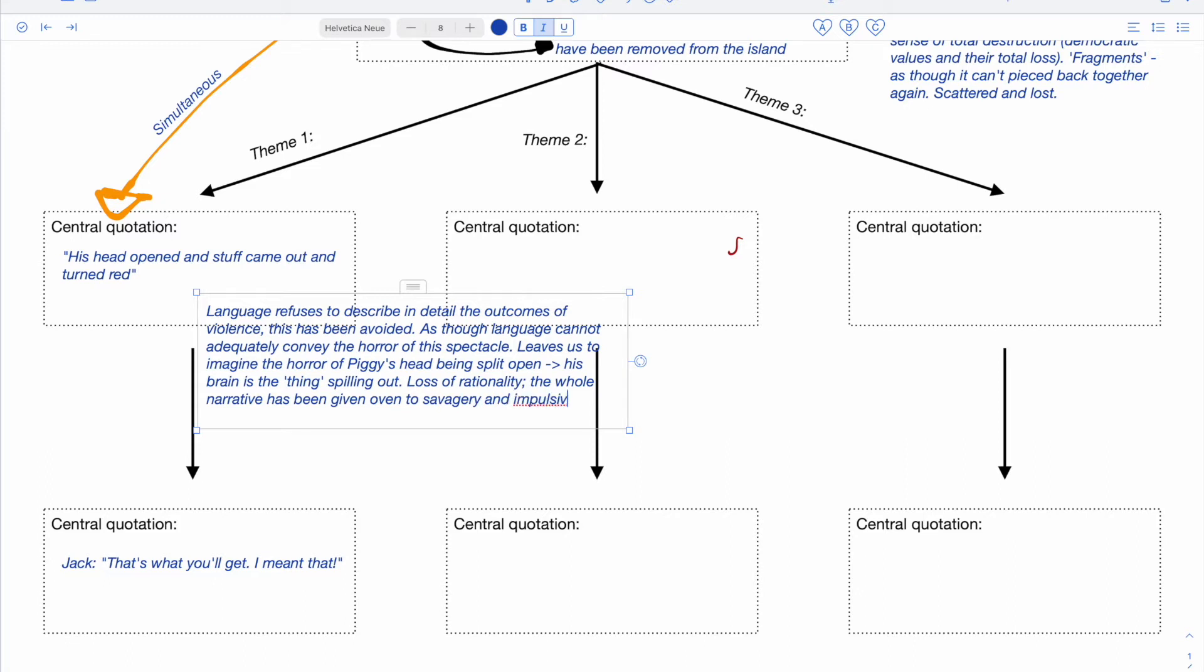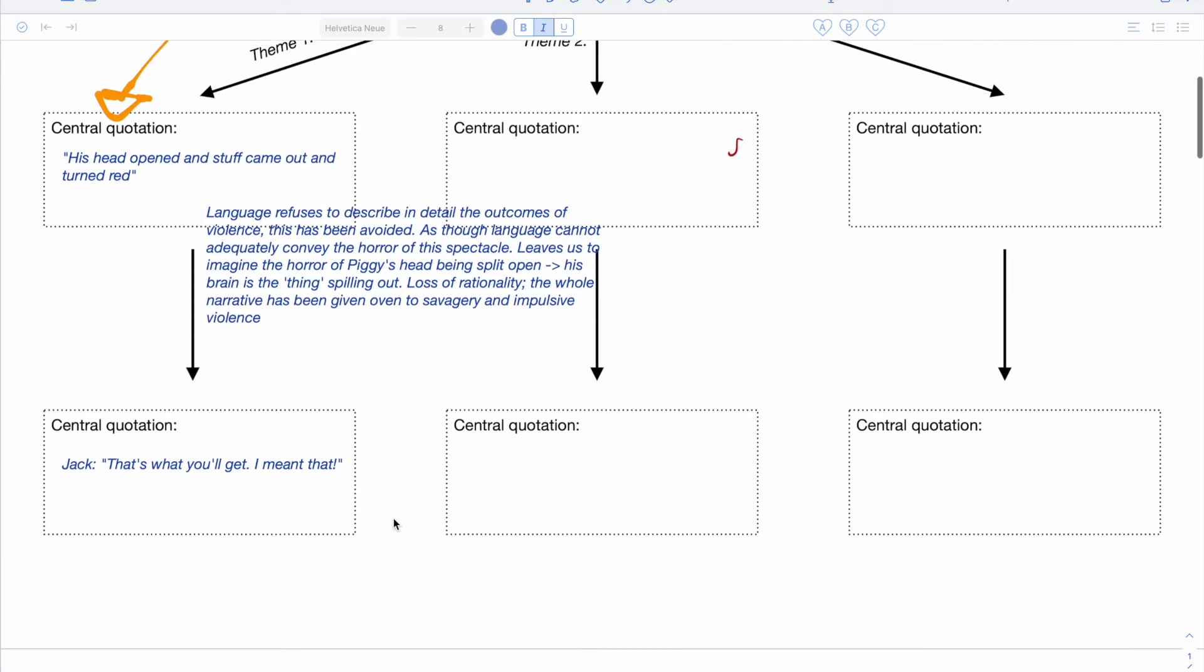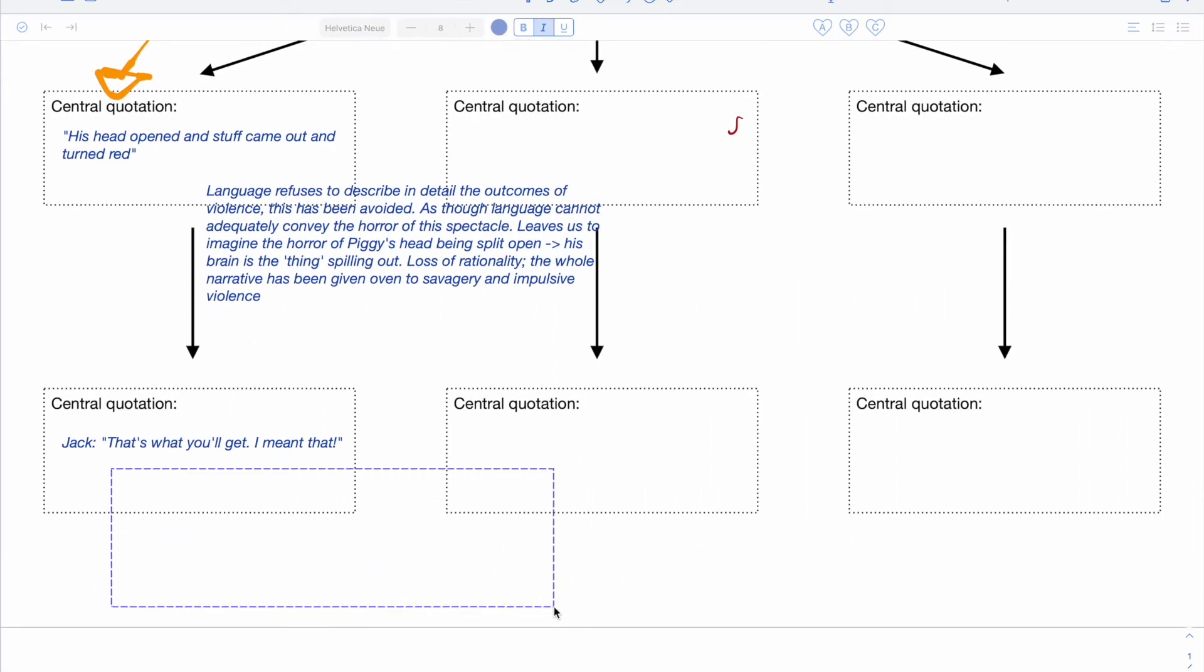And again here we have Jack screaming and shouting out, because it's ultimately Roger who releases the rock and the boulder, but it's Jack who screams out 'that's what you'll get, I meant that.' So there is no remorse, there is no guilt, there is only the sadistic enjoyment of murder and death. And like many dictators and many authoritarian regimes, he believes these actions are justified, but they are the only and correct response to being challenged.